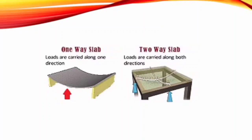In a two-way slab, the slab is supported on all 4 sides and the load is carried in both directions. That's why we provide reinforcement in both directions. In a one-way slab, we provide reinforcement in only one direction. Here is a diagram of one-way and two-way slab — one-way slab carries load in one direction, and two-way slab carries load in both directions.